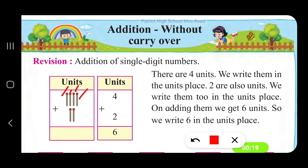Plus we have 2 units: 1, 2. So we write 2. So 4 plus 2 — how much does it give? If we count them together: 1, 2, 3, 4, 5, and 6. So we have 6 matchsticks together. So 4 plus 2 gives us 6.